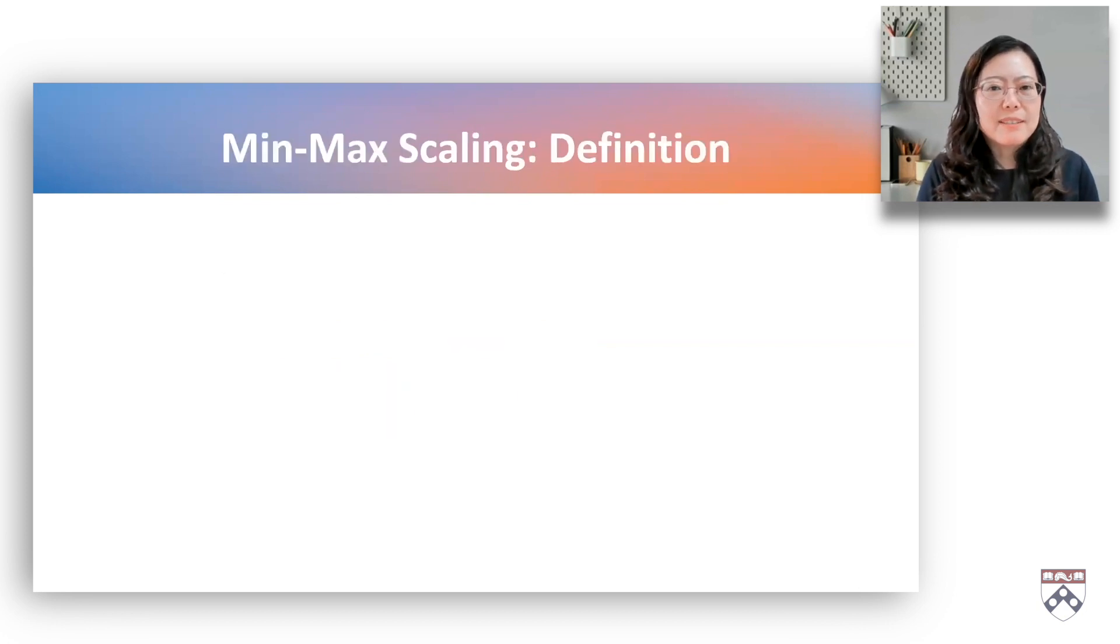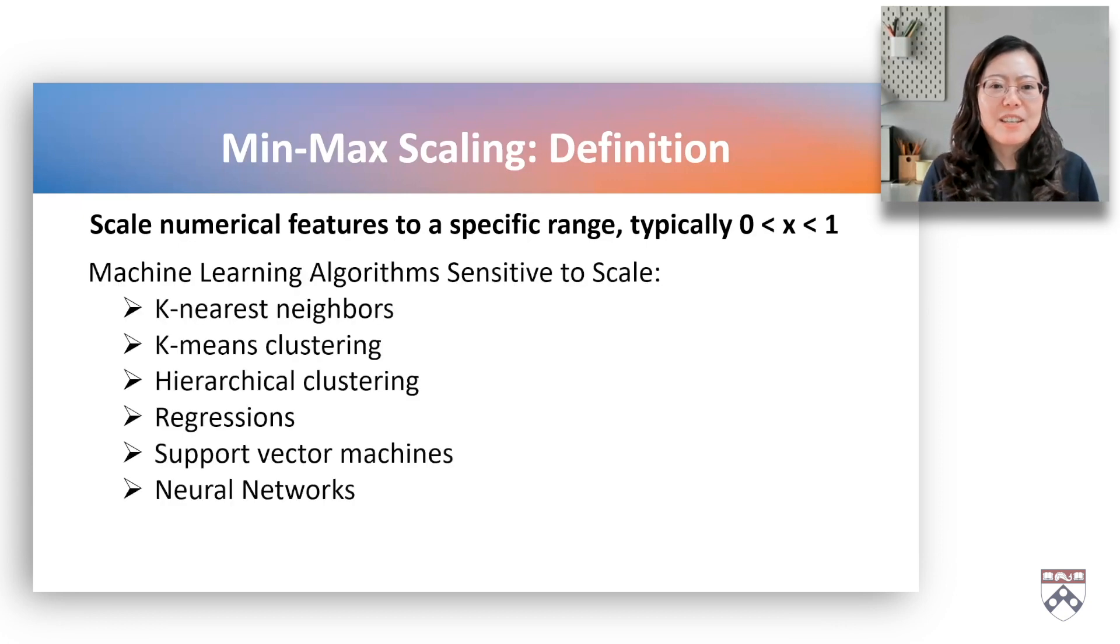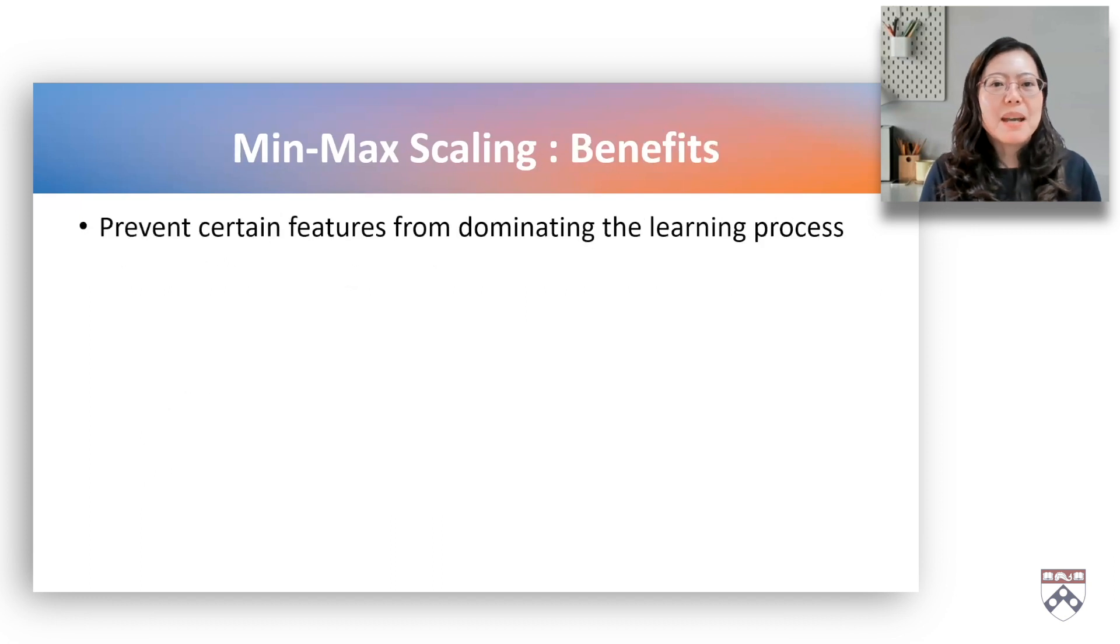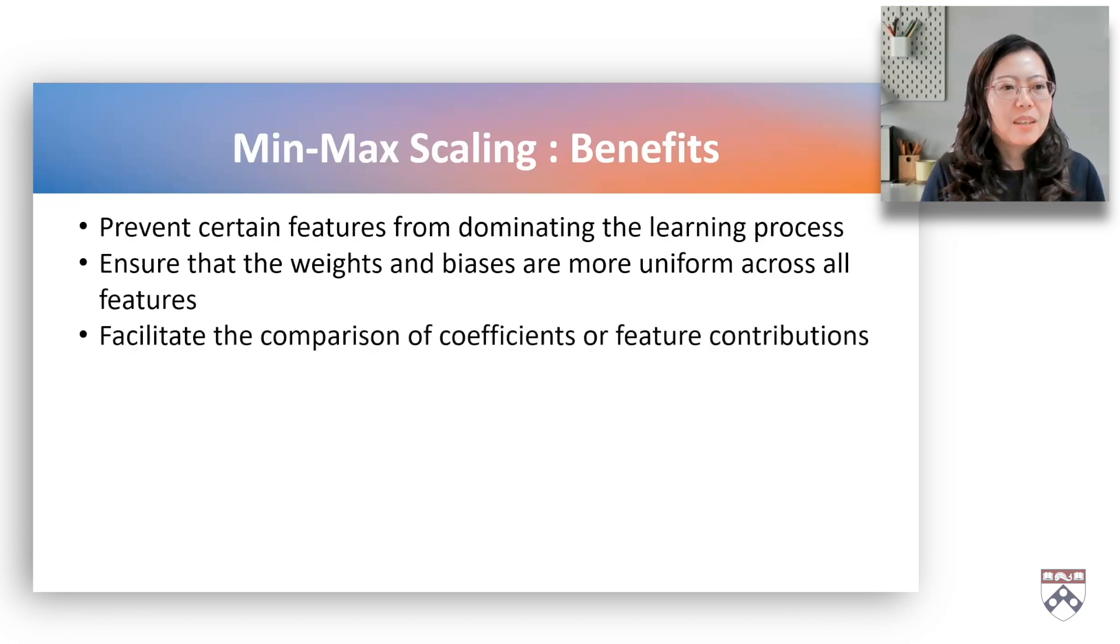Min-max normalization is also known as feature scaling or min-max scaling, which scales numerical features to a specific range, typically 0 to 1. This normalization technique is particularly useful in machine learning contexts, where algorithms are sensitive to the scale of input features, including clustering analysis, regressions, support vector machines, and neural networks. Min-max normalization can prevent certain features from dominating the learning process, ensure that the weights and biases are more uniform across all features.